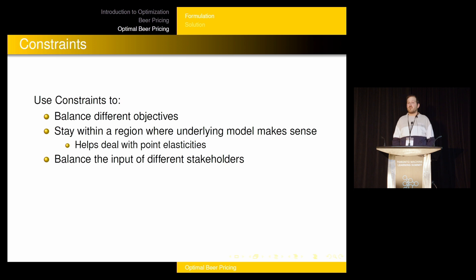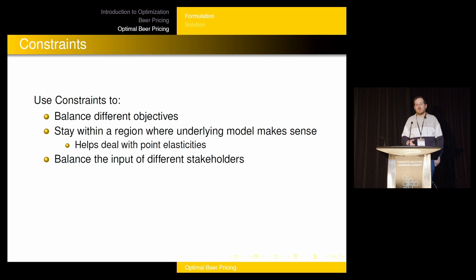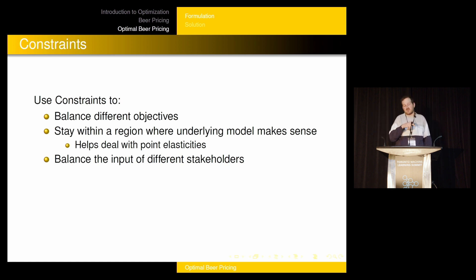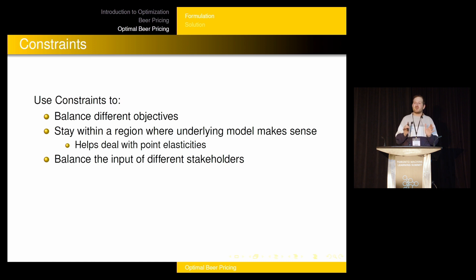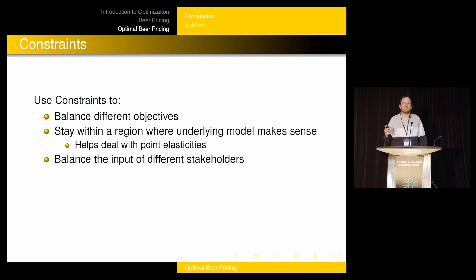You can use constraints to stay within a region where the underlying model makes sense. This is what I meant when I said I'd come back to point elasticities. You have point elasticities — when you change the price by 1%, demand decreases by 0.75%. If you increase the price by 10%, is demand going to fall by 7.5%? Maybe more — these things might not be linear. Since we have point elasticity and not a full function, we probably want to stay in a neighborhood around the point where we actually have a good elasticity estimate. A constraint saying 'don't go too far from where I used to be' does that. If we want to keep raising prices over time, we raise them a little, get new data, rebuild our elasticity estimates, and raise again. We shouldn't make huge price jumps because we really don't know what's going to happen.